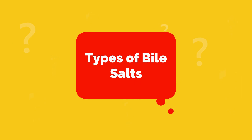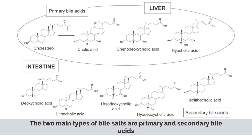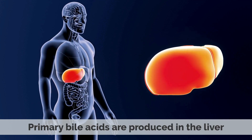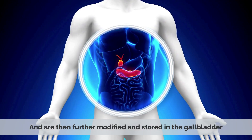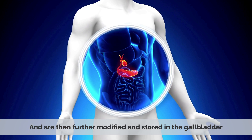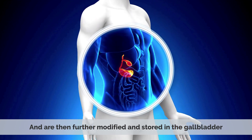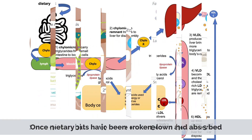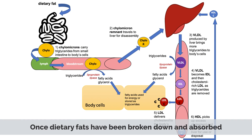The two main types of bile salts are primary and secondary bile acids. Primary bile acids are produced in the liver and are then further modified and stored in the gallbladder. Secondary bile acids are created in the intestine once dietary fats have been broken down and absorbed.